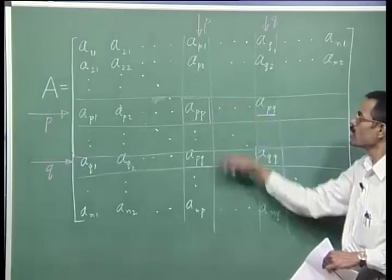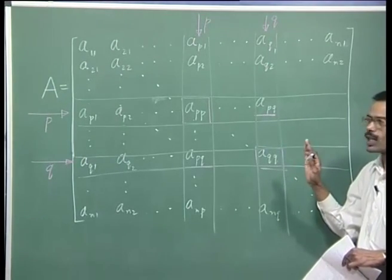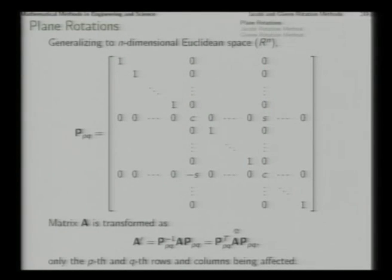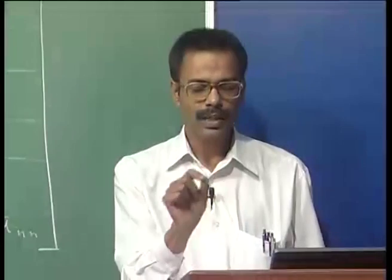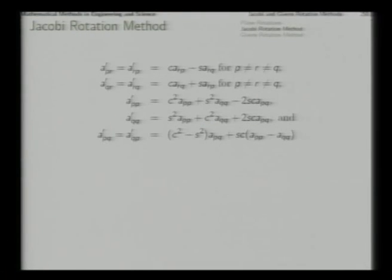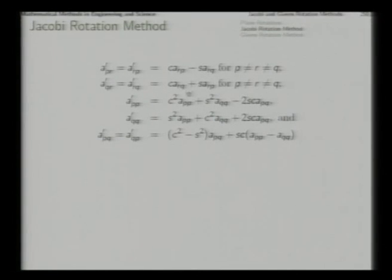That means through this entire transformation, only those entries of A get changed which fall either on the p-th and q-th rows or the p-th and q-th columns. These are the elements of A which are going to change through this entire transformation. How are they changed? This is a matter of pure algebraic calculations.